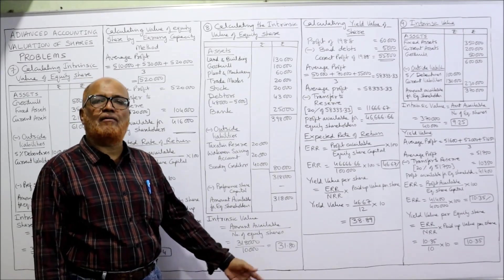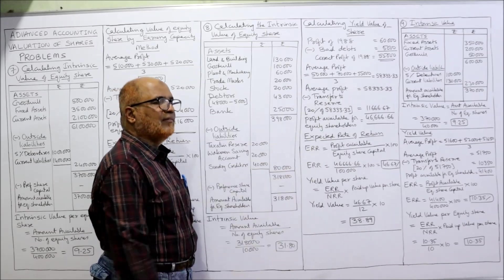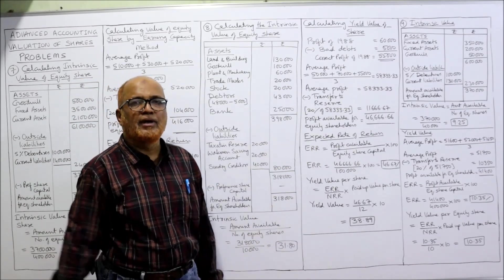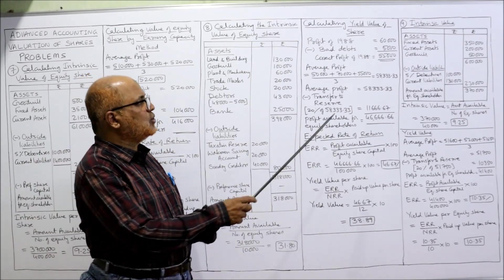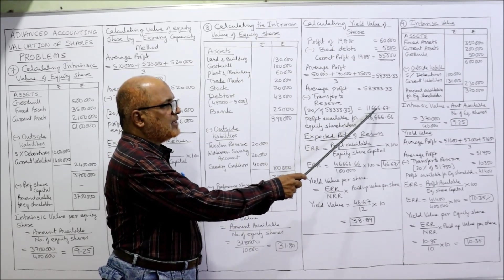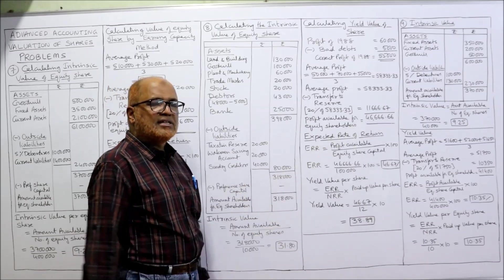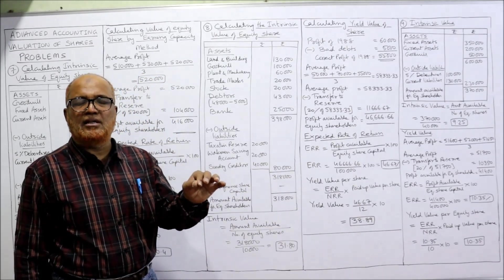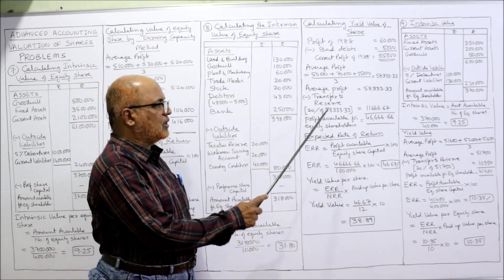Average profit: simple average of 50,000 + 70,000 + 55,000 ÷ 3 = 58,333.33. This is the average profit. From average profit, transfer 20% to reserve: 58,333.33 × 20% = 11,666.67. Deduct — remaining: 46,666.66. This is the profit available for equity shareholders.